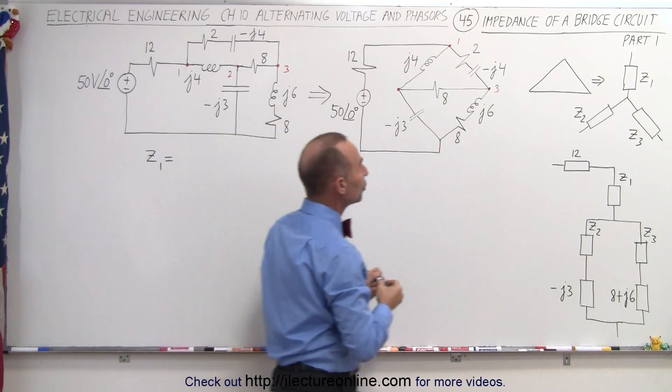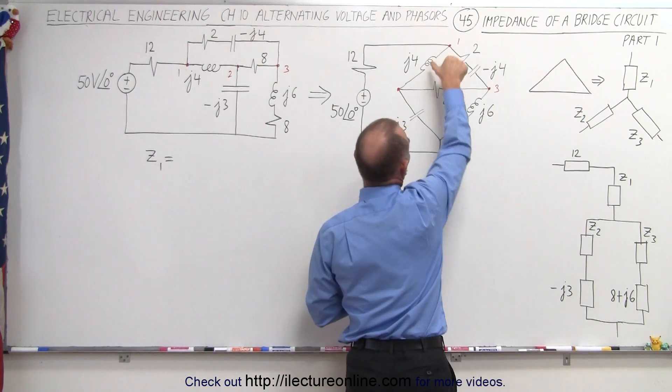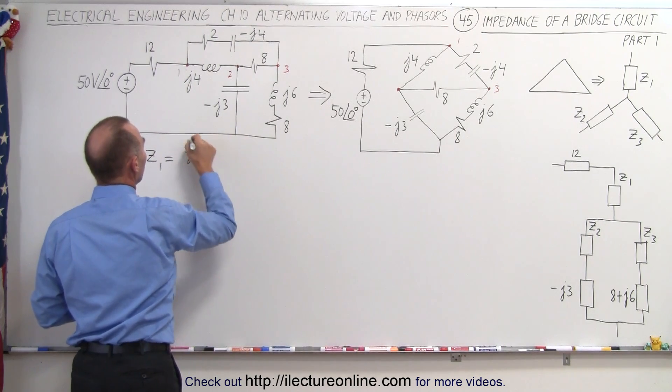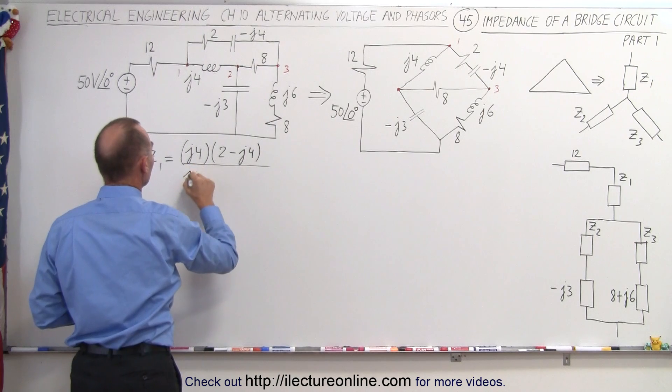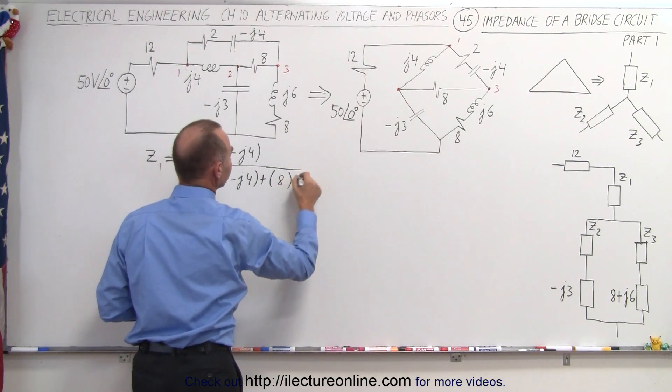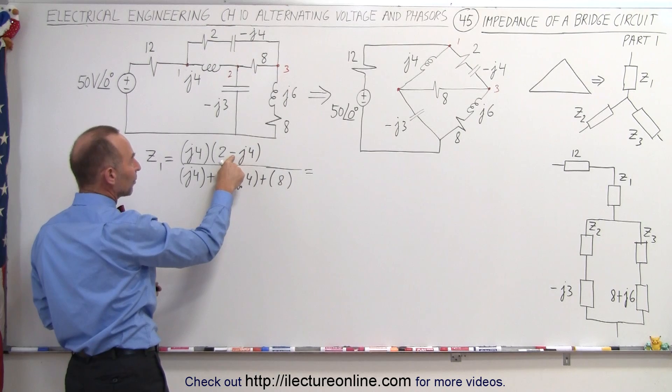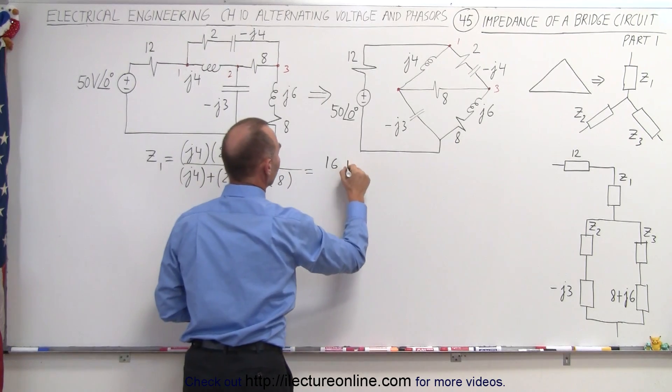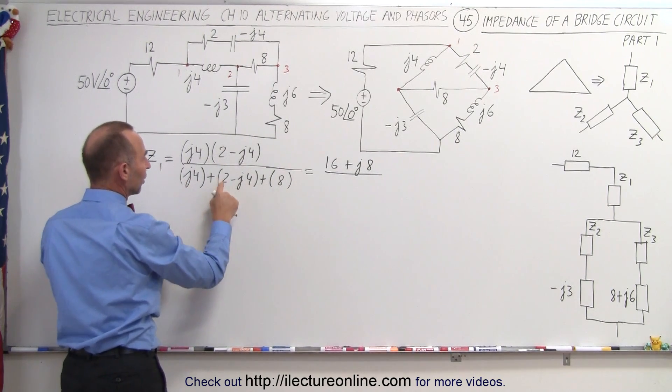Well, Z1 is equal to, now notice that this goes right in here. So we take the product of those two branches and divide it by the sum of the three branches. So that's the product of these two divided by the sum of all three right here. So that becomes J4 multiplied times 2 minus J4, all divided by the sum of all three branches, which is J4 added 2, 2 minus J4, and added that to the last one which is 8. So here we'll multiply the numerator. We first multiply these two together. J times J is a negative 1, times the negative 1 becomes positive, and so that we get 4 times 4 which is 16. And then multiply this times this, that becomes plus J8. All divided by, here we have a plus J4 and a minus J4, they cancel out, and a 2 plus 8 gives us 10.